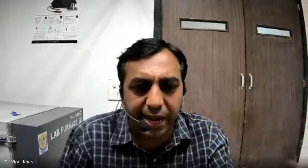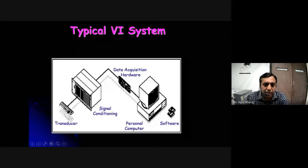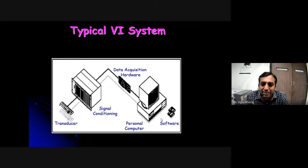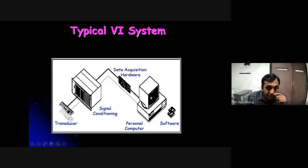This diagram explains everything: you have a transducer sensing pressure, sound, or light — some way of measuring a physical parameter. That is conditioned: noise removed, signal amplified, unwanted parts filtered. It's then converted into a digital equivalent, which is read by a computer and processed by software. The software controls everything. This is a typical virtual instrument — transducer, signal conditioner, DAQ hardware, computer, and software.